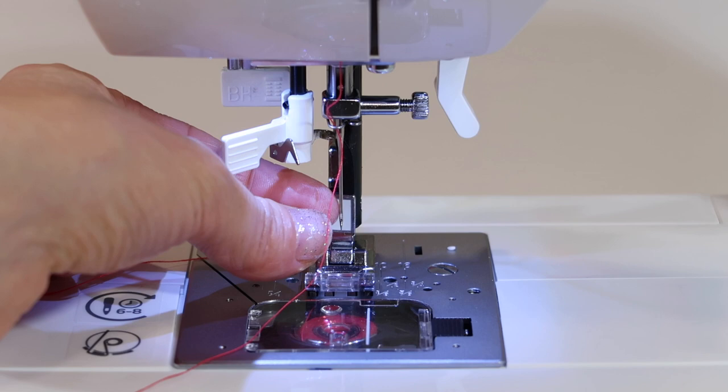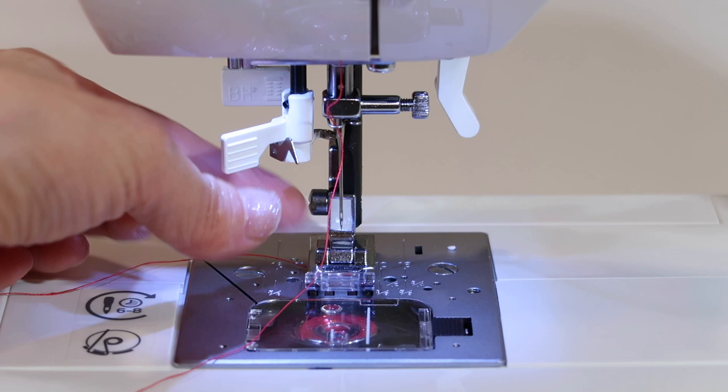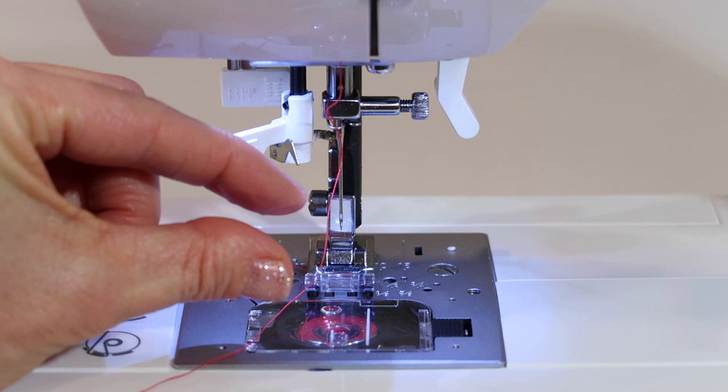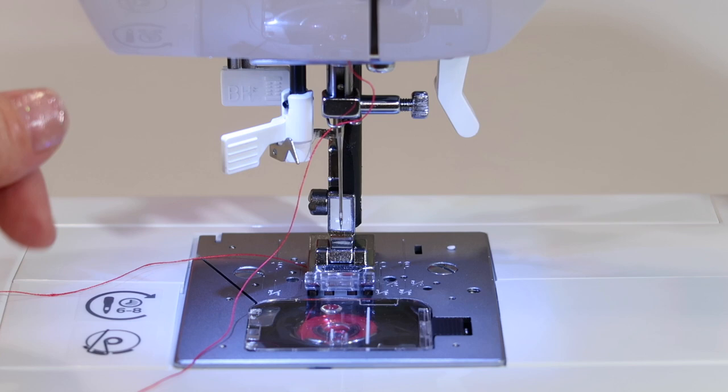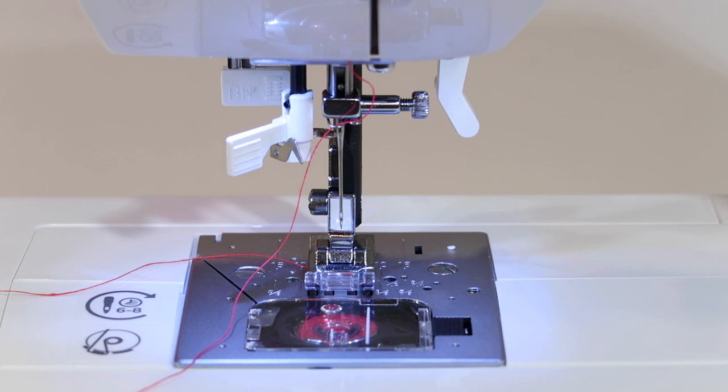Sometimes students will put a new needle in and not push it up as high as it's supposed to go, so the eye is actually much lower. When they go to use the needle threader, they realize that neither one of them are close to each other, which is a good clue to put the needle back all the way to the highest point before sewing and damaging the machine.